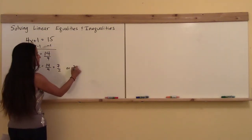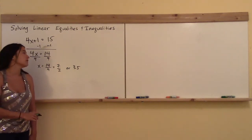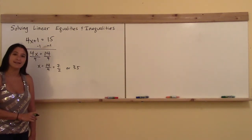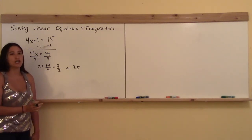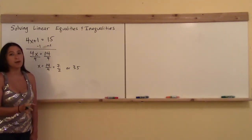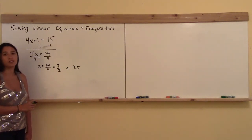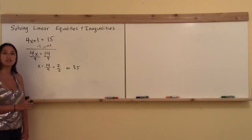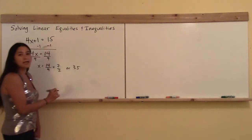Or, if you like, 3.5. So x is equal to 7 over 2 or 3.5. Did you get it? Now, maybe you got an answer, but you're not exactly sure if you got the right answer. Keep in mind that when you're doing something like this, you can always check your work by plugging it back in.